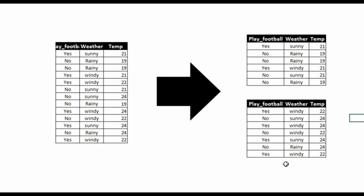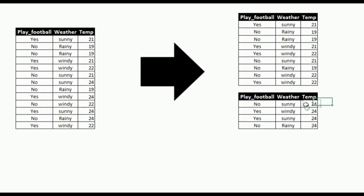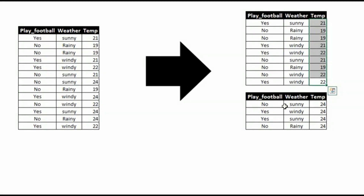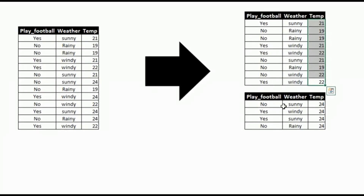For the split at 23, on the higher side we have 4 items: 2 no and 2 yes. On the lower side we have 9 items: 5 yes and 4 no. So with this we are able to split our data based on both categorical and numerical variables.